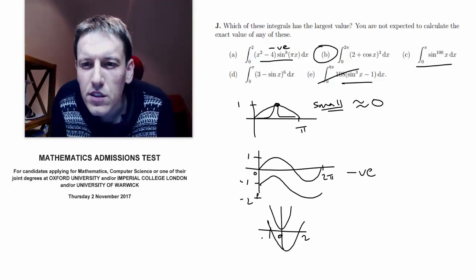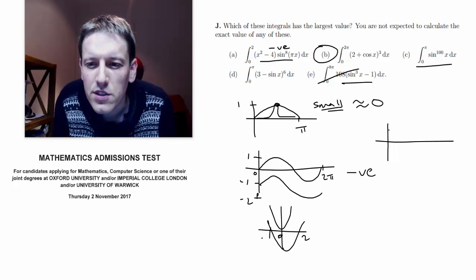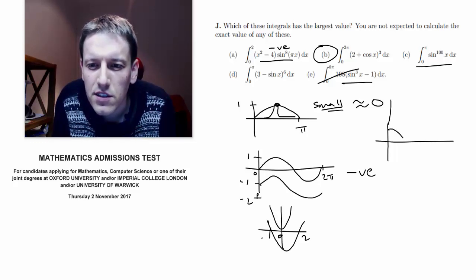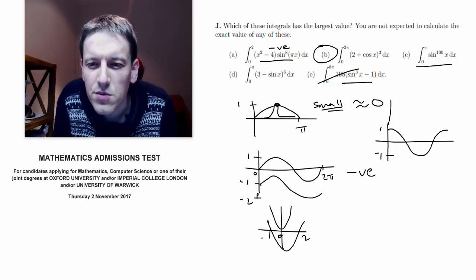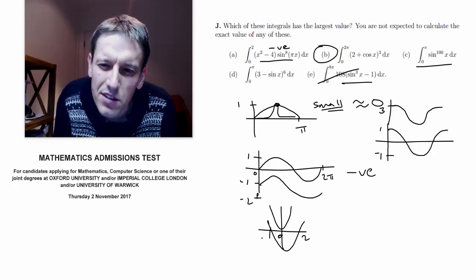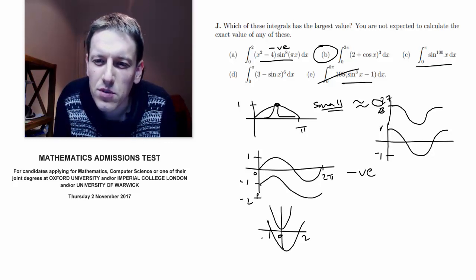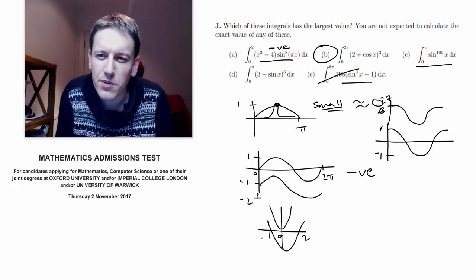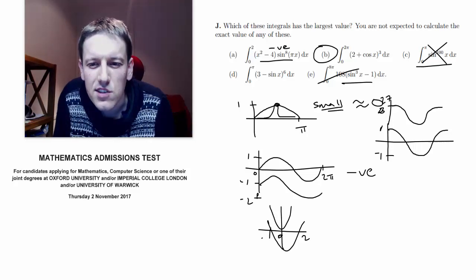Let's have a look at b. 2 plus cos cubed dx. All cubed dx. So cos x is going to look something like this. Between 0 and 2 pi, it goes up to 1, down to minus 1. If I add 2 to it, it's going to be between 1 and 3. It looks something like that. And then I'm going to cube those numbers. So the kind of values I'm going to end up with are going to be between 1 and 3 cubed, which is going to be values between 1 and 27. So this one's definitely bigger than c. It's a reasonably large positive integral.